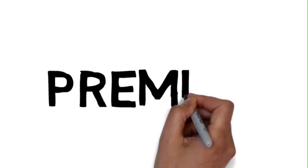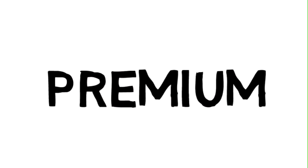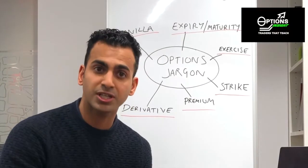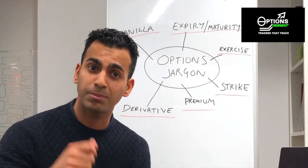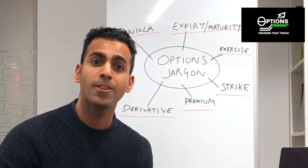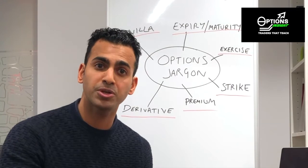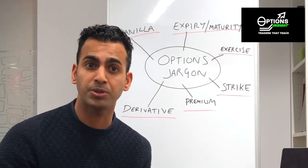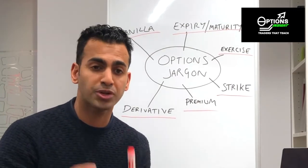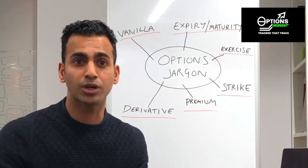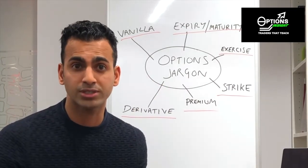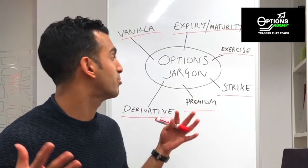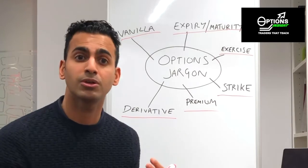Premium — that's just the price you pay for an option. If you buy an option, you have to pay for it. The price you pay for an option is the premium. If you sell the option, then you receive the premium. So premium is another fancy word just for the price. And that's the first group of basic terms for options.